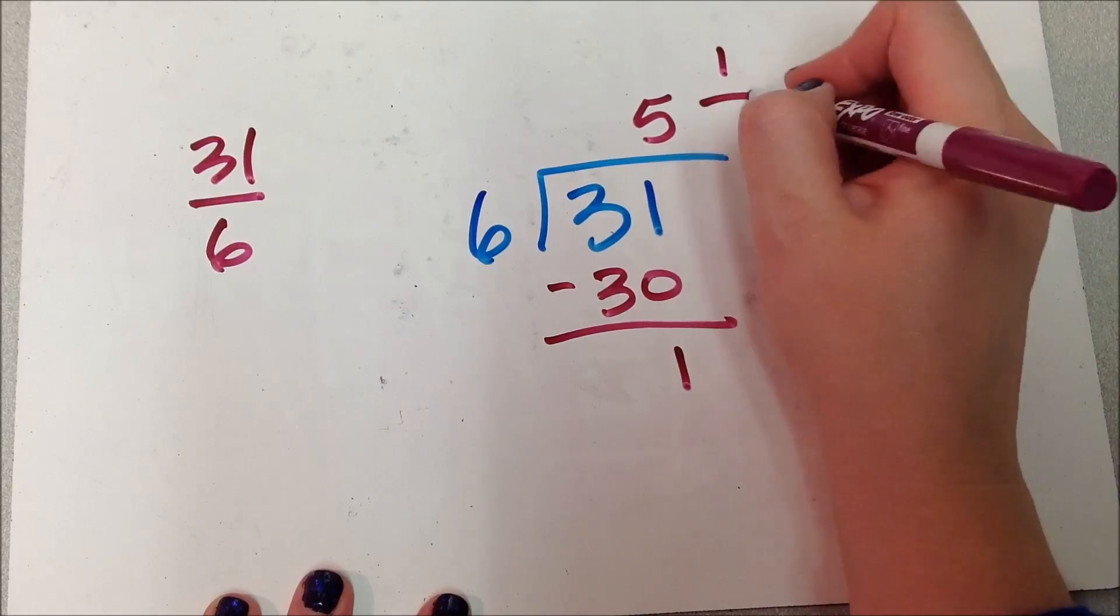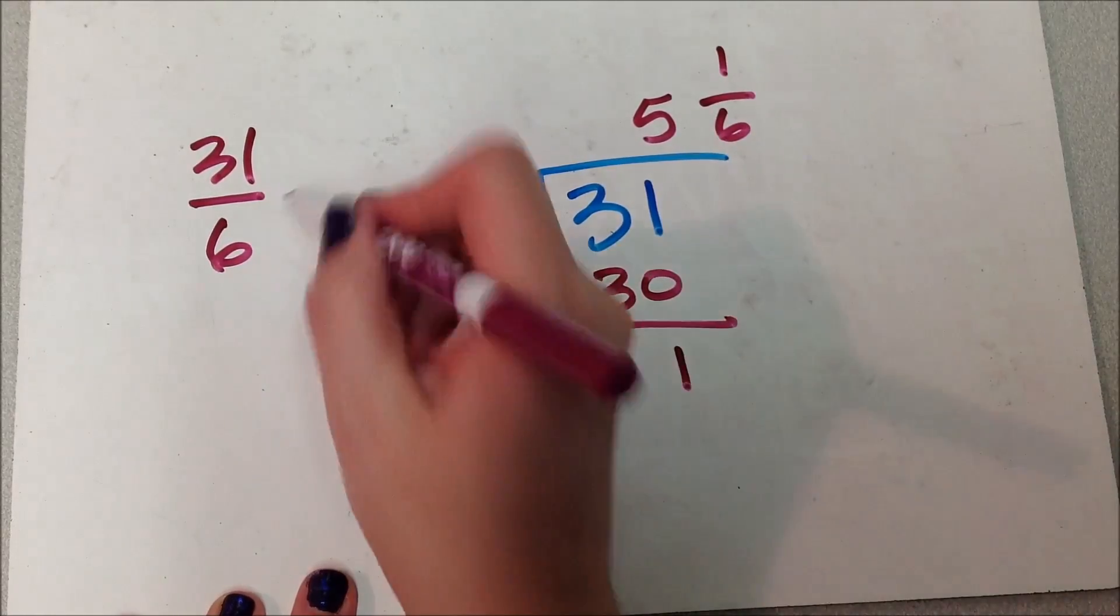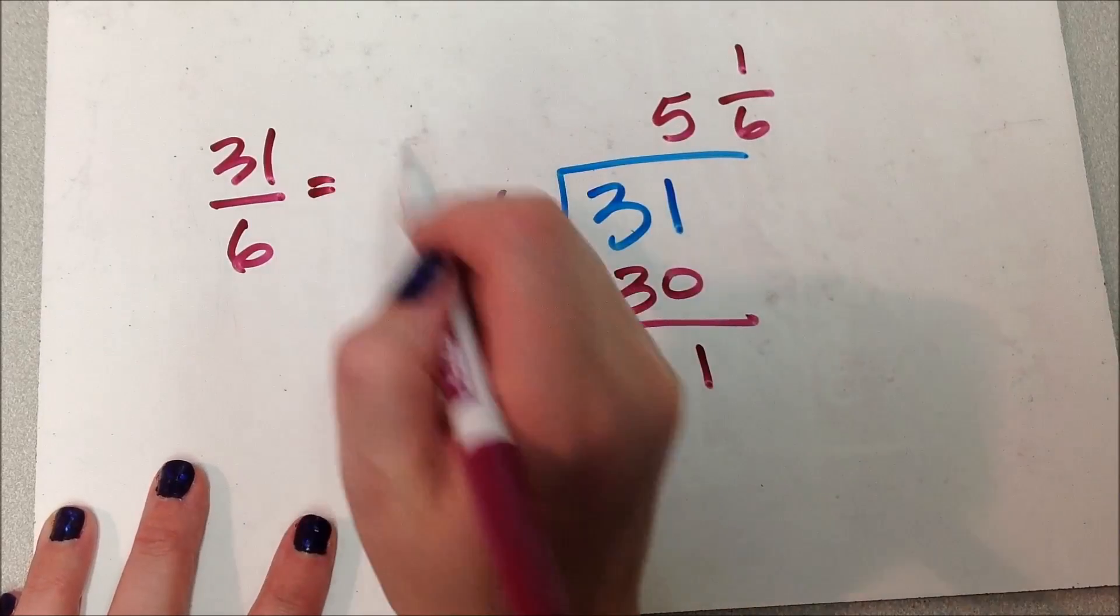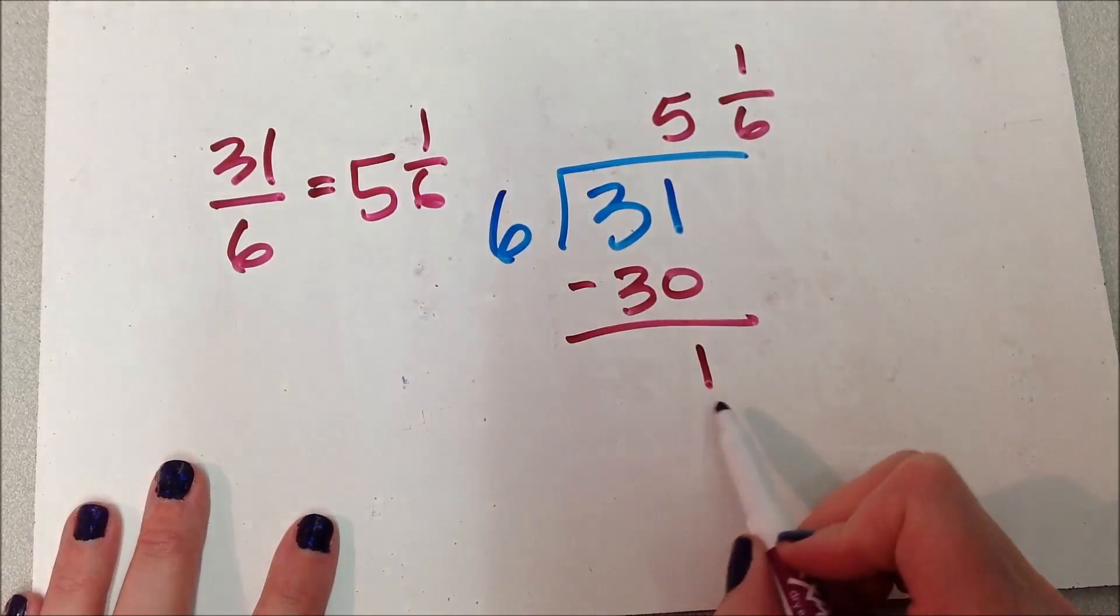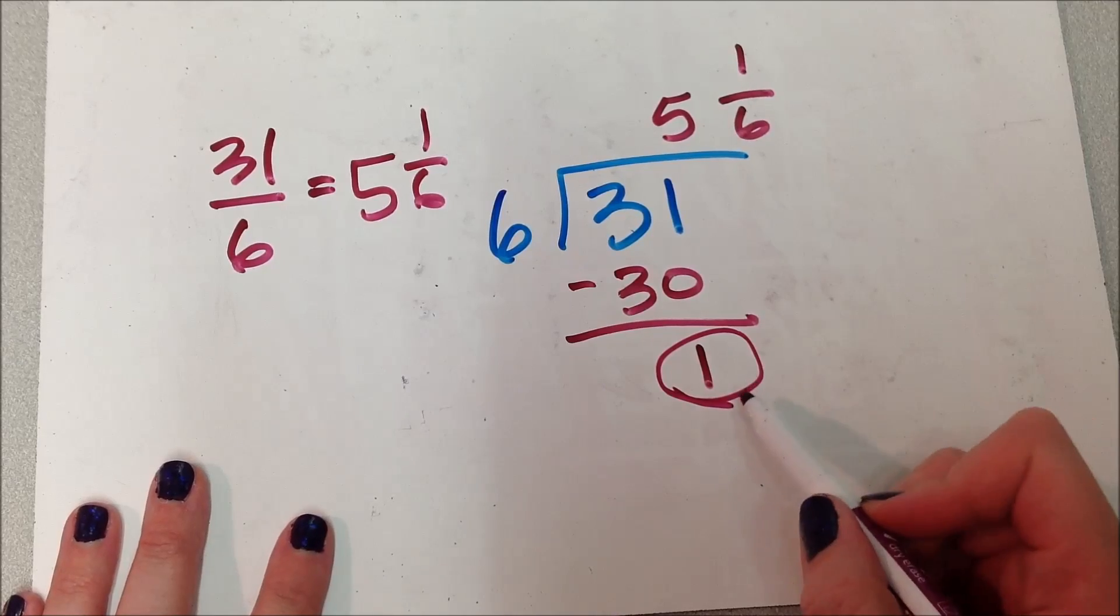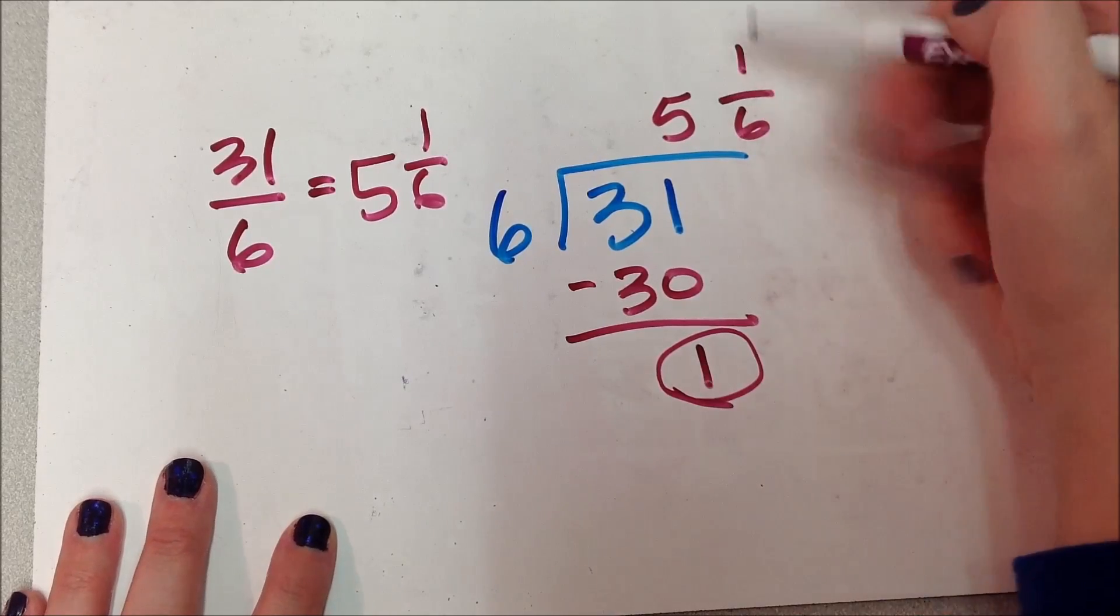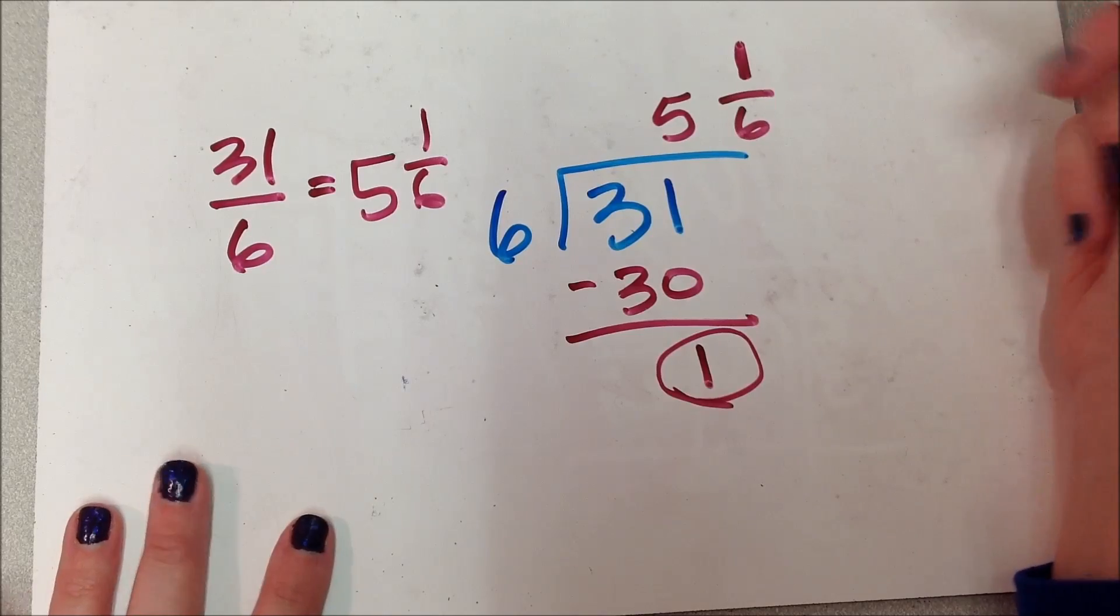So I have 5 and 1 sixth, right? And so I would come back over here and say 5 and 1 sixth. So when I got my remainder, when I got to this point, I brought it up, right, and wrote it as the top of my fraction.